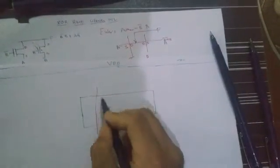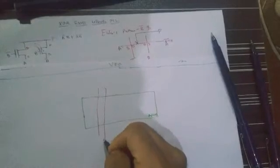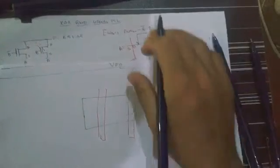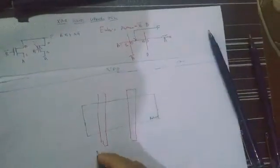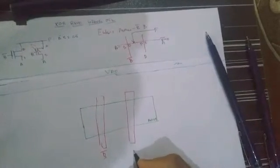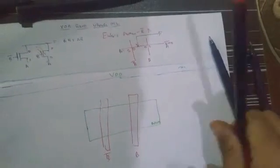So we will take the polysilicon layers to mark the gates of the transistor. So one transistor is B bar and one is B.